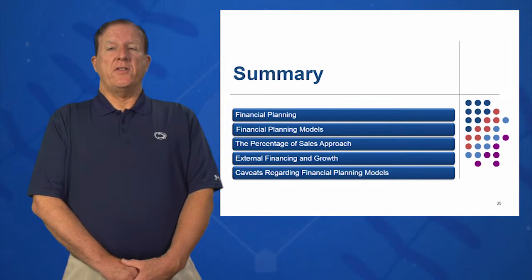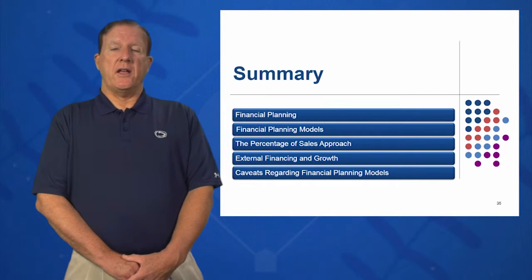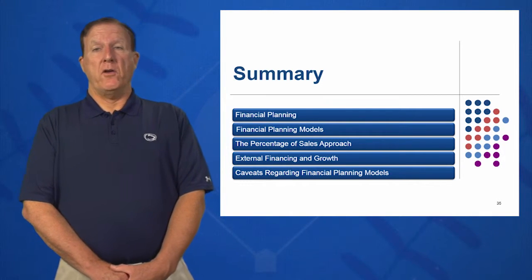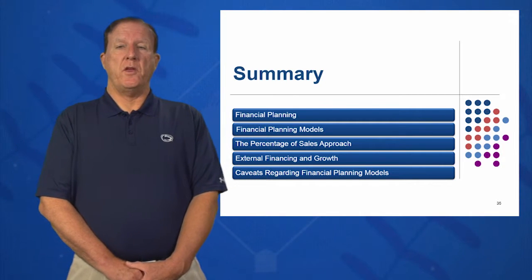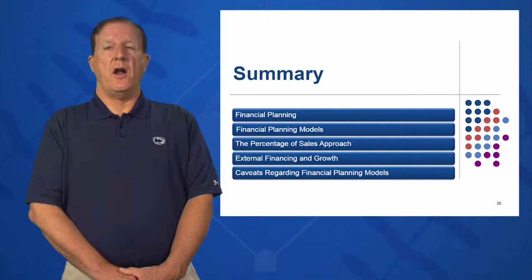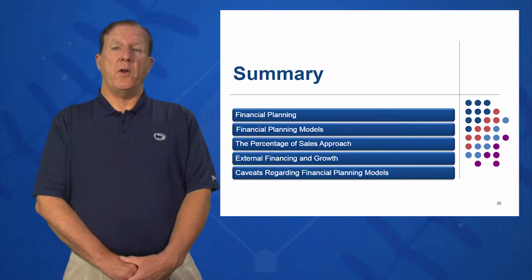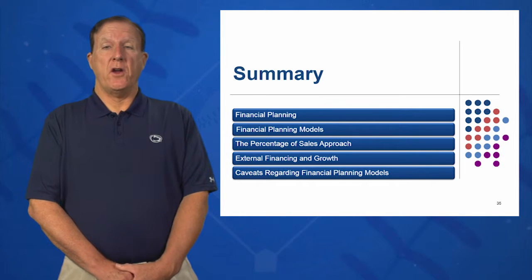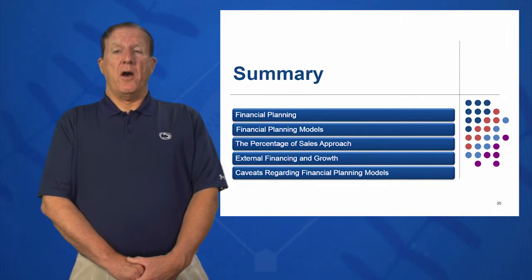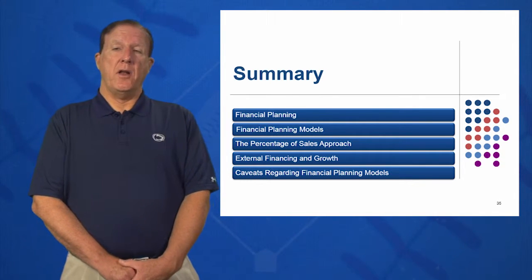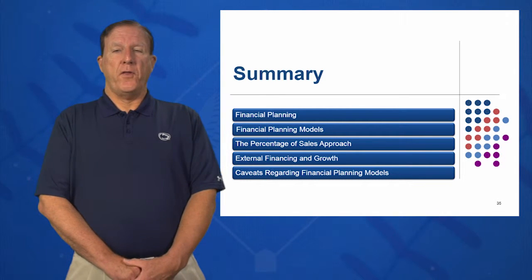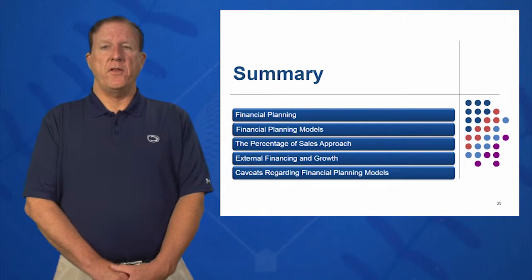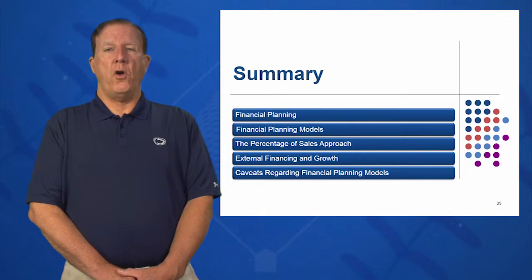Objective number four covered external financing and growth — how much external financing is required if you want to grow at 20% or 25%, as in the Rosengarten and Hoffman cases. Finally, what are some caveats regarding financial planning models? Financial planning models don't always ask the right questions, but they will hopefully get you moving in the right direction. Hopefully you've enjoyed session four of Introduction to Finance. Thank you.